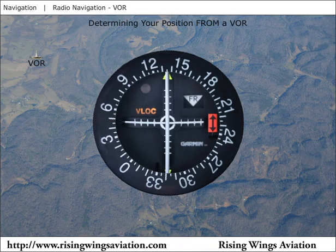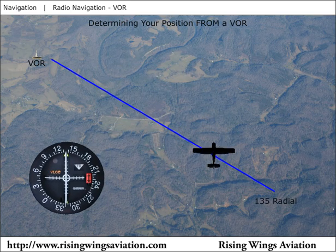For example, if the reading was 135, this tells you the airplane is located over the 135 radial. In other words, the airplane is southeast of the VOR.